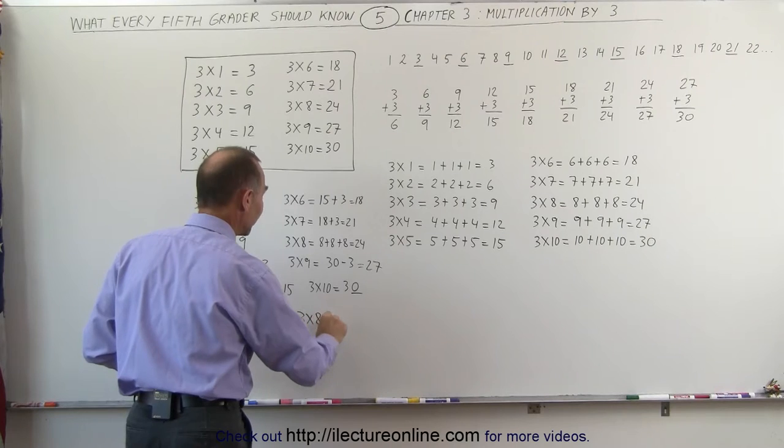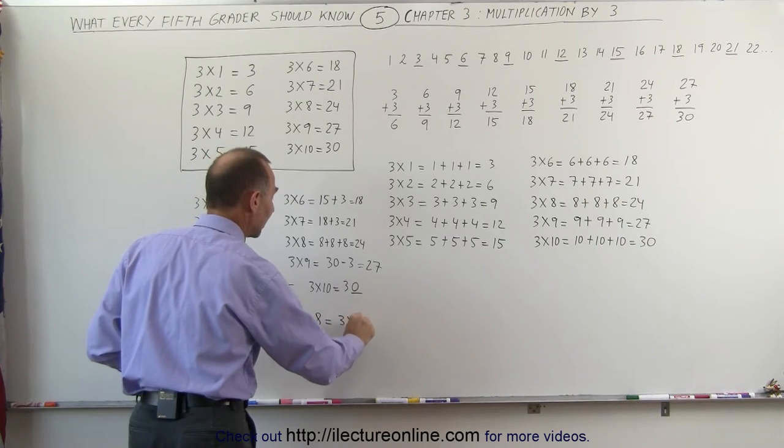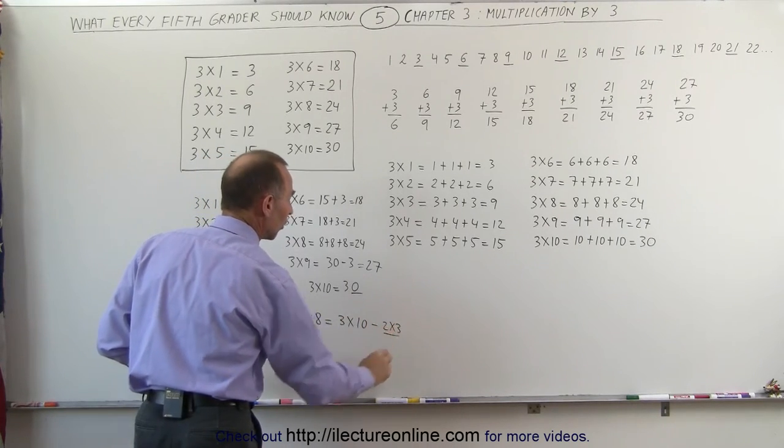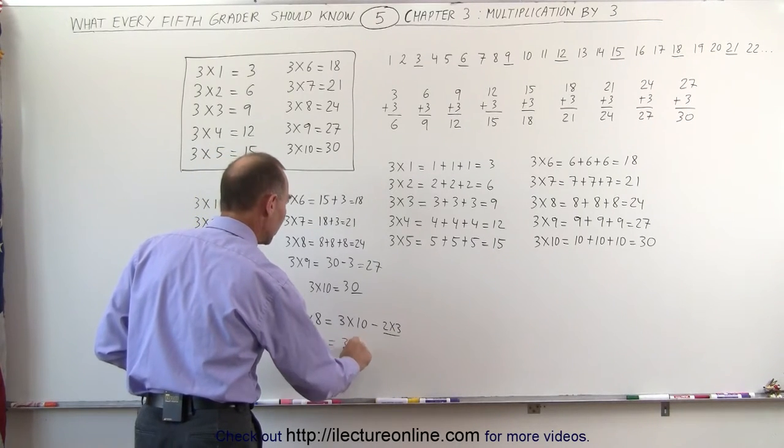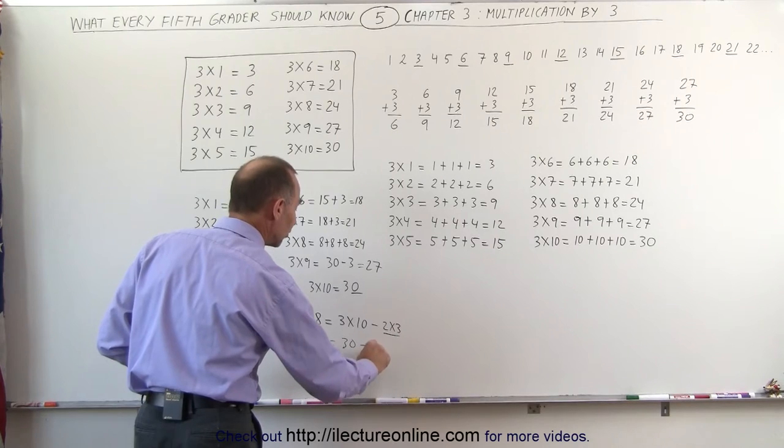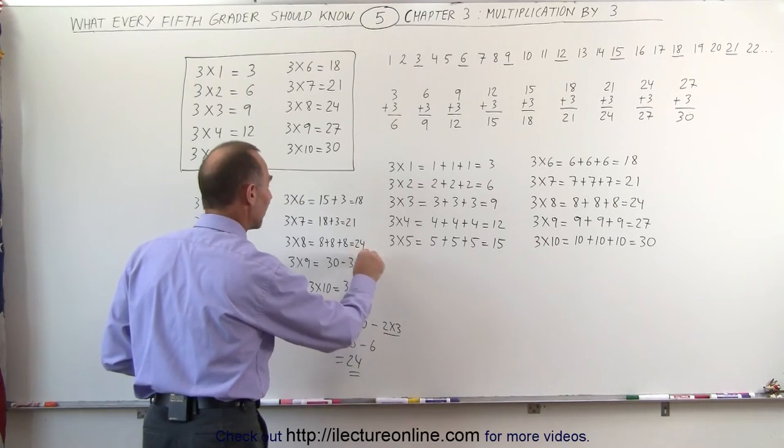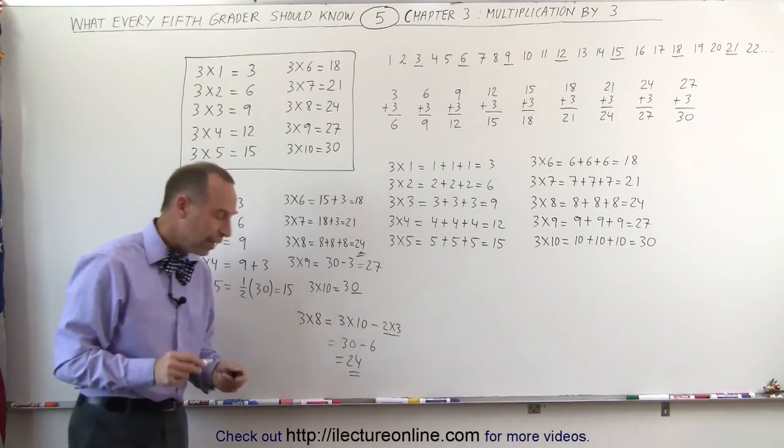3 times 8 would be the same thing as saying 3 times 10 minus 2 times 3, because 8 is 2 less than 10. So this would be equal to 30 minus 2 threes, which is 6, and that's equal to 24, which is the same answer that we got right over there.